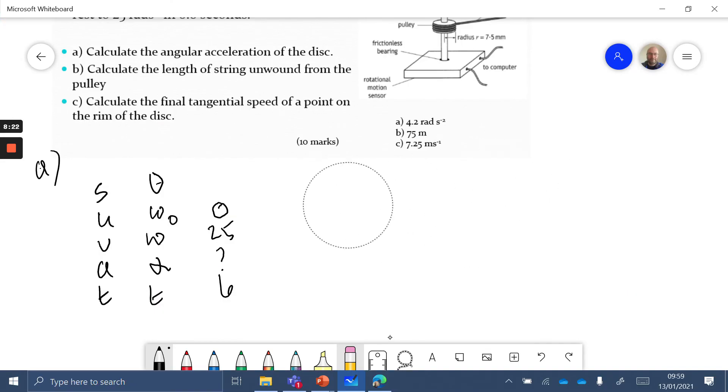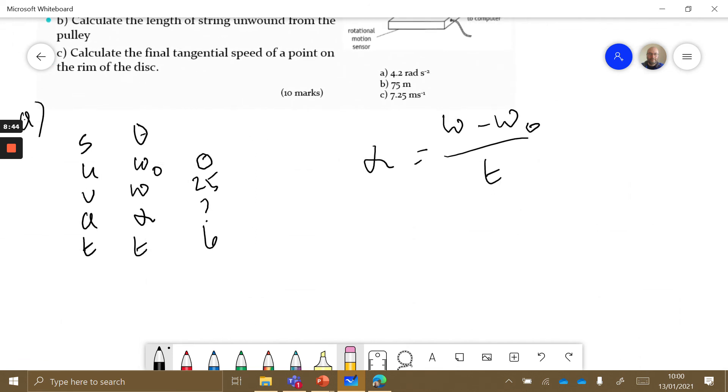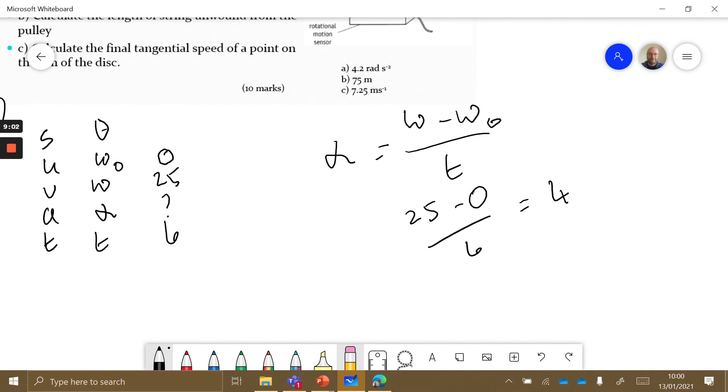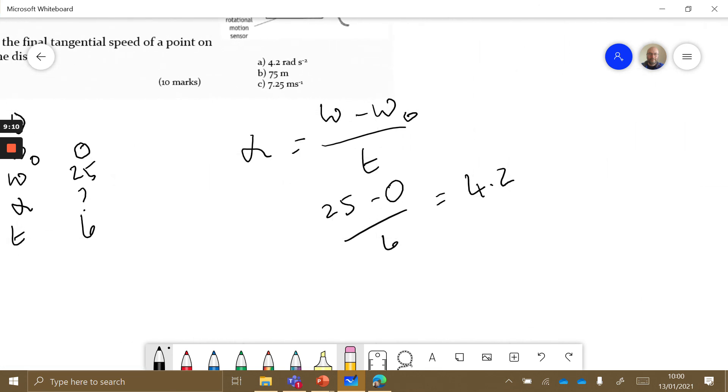I'm going to use theta equals a half omega plus omega naught t. Wait, what am I doing? I should be going for this one. Everybody's having a bad day - I've only had one coffee today. Can you believe I did that? That's embarrassing. I'm not looking for theta, I'm looking for alpha. So alpha equals omega minus omega naught over t. So that equals 25 minus 0 over 6, and that therefore equals 4.2.